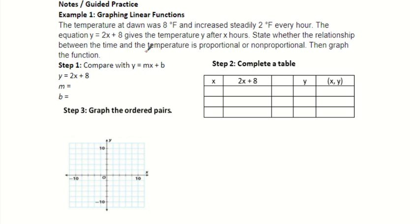The temperature at dawn was 8 degrees and increased steadily 2 degrees every hour. Here's our equation, 2 degrees every hour, or 2 degrees per hour, but we started here, so there's my y-intercept. We want to state whether the relationship is proportional or non-proportional. We want to graph it, and we also want to determine is it linear or non-linear. Right away, by looking at the equation, we should be able to tell if it's proportional or non-proportional, and it's not because of the plus 8.